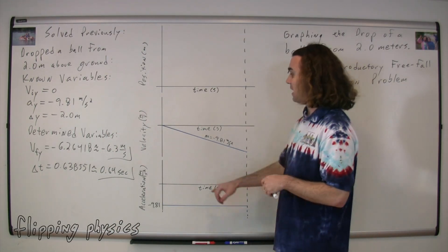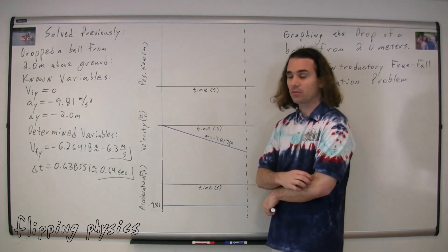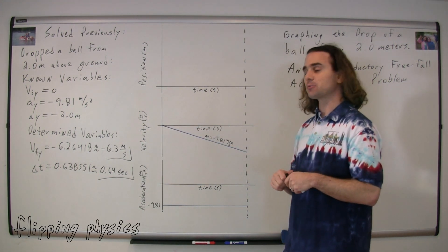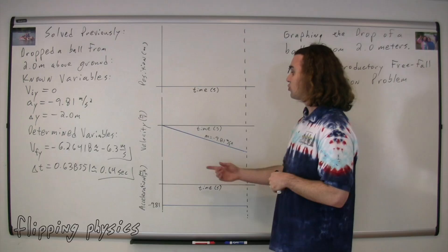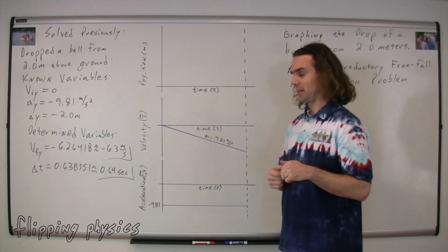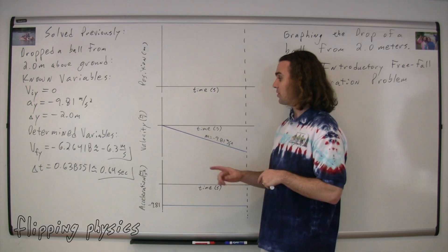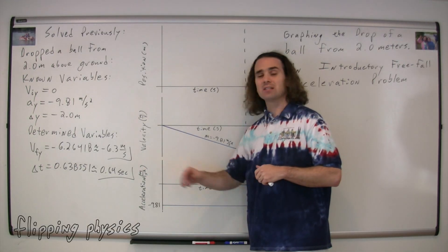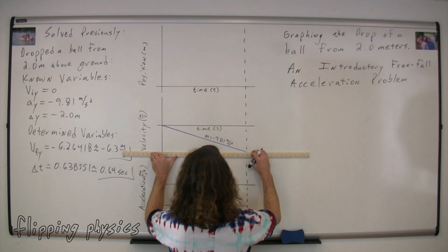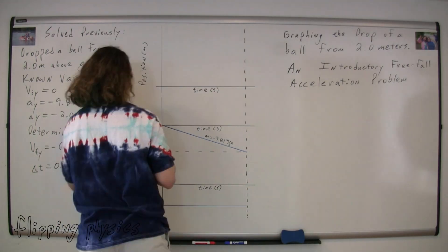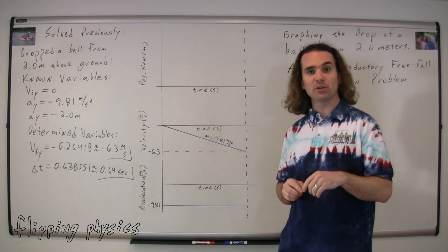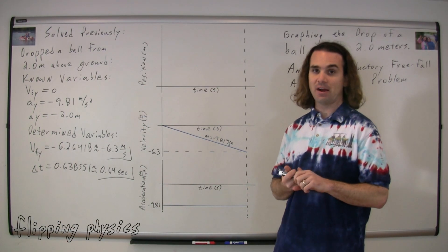The initial velocity was zero, so we start there. And the slope of the line is going to be negative 9.81 meters per second squared, so we're going to have a straight line with a slope of negative 9.81 meters per second squared. We also know that the final velocity was negative 6.3 meters per second, so we can add that to the graph. And we also know the total change in time was 0.64 seconds, so we can also add that to the graph.